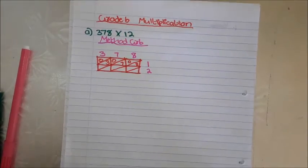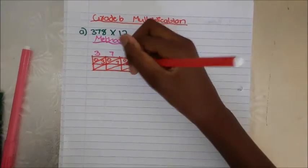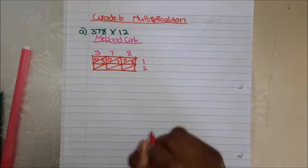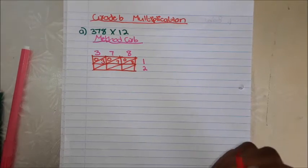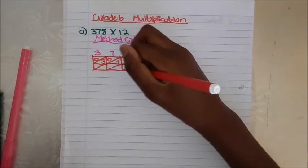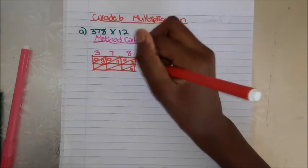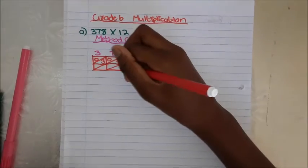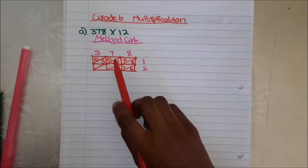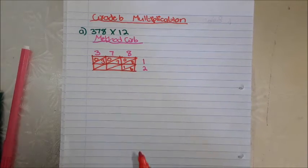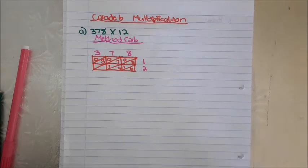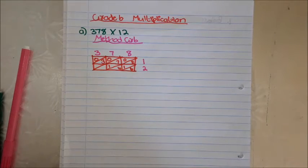Now 8 times 2 is 16 — where do we write it? The 6 stays in the bottom triangle and the 1 comes in the top. The very same thing with the other sums. 7 times 2 is 14 — same thing. 14.